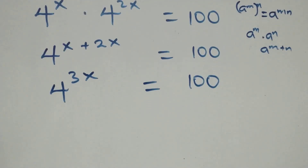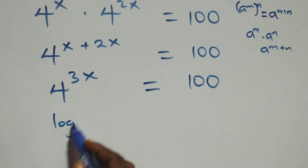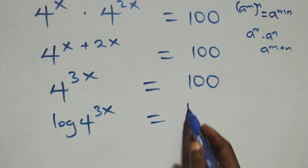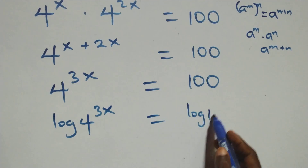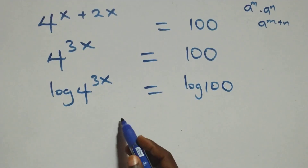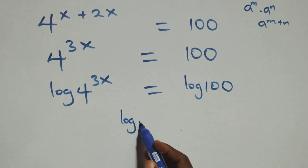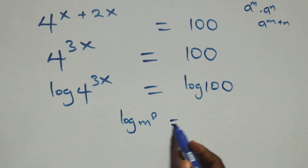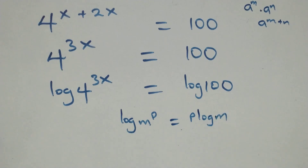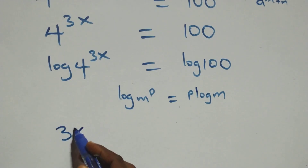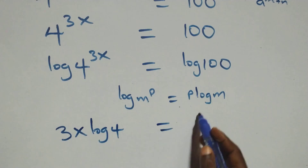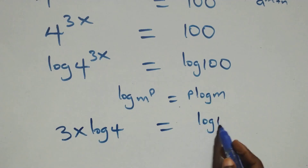Next step, we take the log on both sides. We have log of 4 raised to power 3x equals to log 100. Then we apply the power log rule: log of n raised to power p is the same thing as p·log n. So we have 3x·log 4 equals to log 100 on this side.